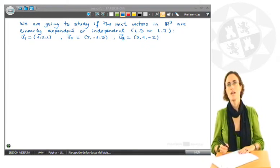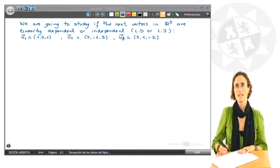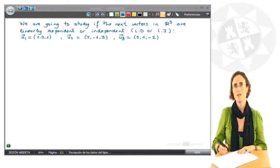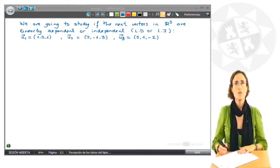In this exercise we are going to study if the next vectors in R³ are linearly dependent or independent. The vectors are U1 equal (1, 0, 1),